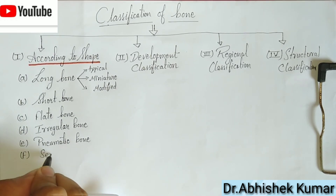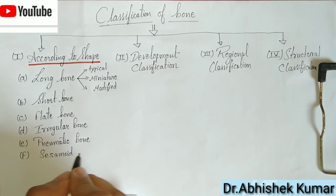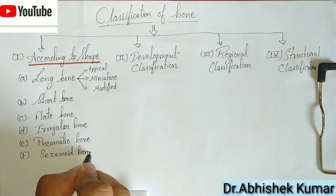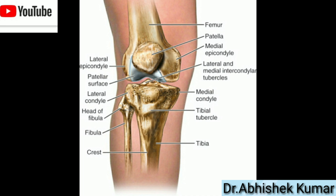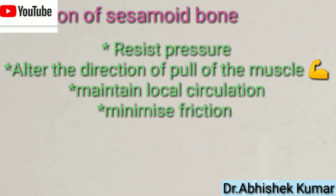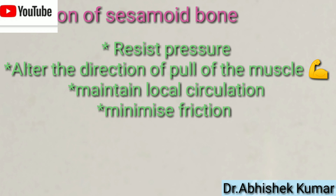Then come to the sesamoid bone. These bones have bony nodules found embedded in tendons and joints, like the patella, which you can see on the screen. The functions of sesamoid bones are: to resist pressure, alter the direction of pull of the muscle, maintain local circulation, and minimize friction.